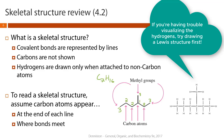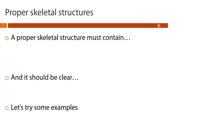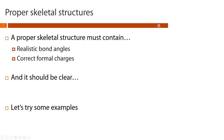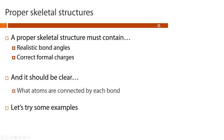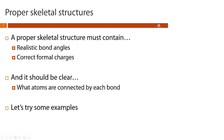So the molecular formula of this molecule is C7H16. Now that you have a refresher on skeletal structures, let's talk about the proper way to draw them. A skeletal structure needs to have realistic bond angles and correct formal charges, and it should be clear which atoms are connected by which bonds.